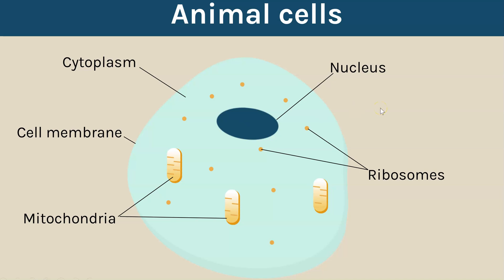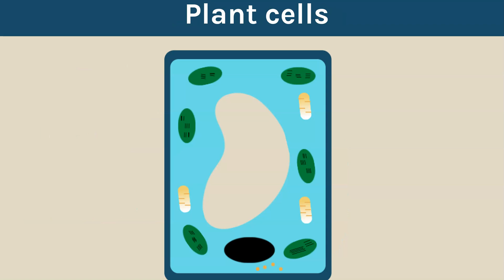Now if we compare this to a plant cell they do have lots of structures in common. So they also have cytoplasm, they have a cell membrane, they have mitochondria.